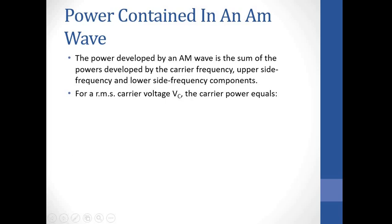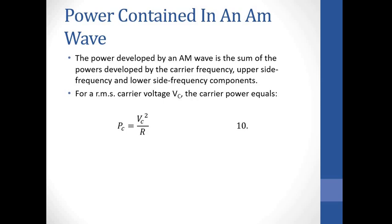The power developed by an AM signal is the sum of powers developed by the carrier, the upper side frequency, and the lower side frequency component. We are going to calculate the power for each component and then sum the three powers to give us the total power of an AM signal. Power is given by V squared over R from basic electricity, where V is the voltage and R is the resistance.